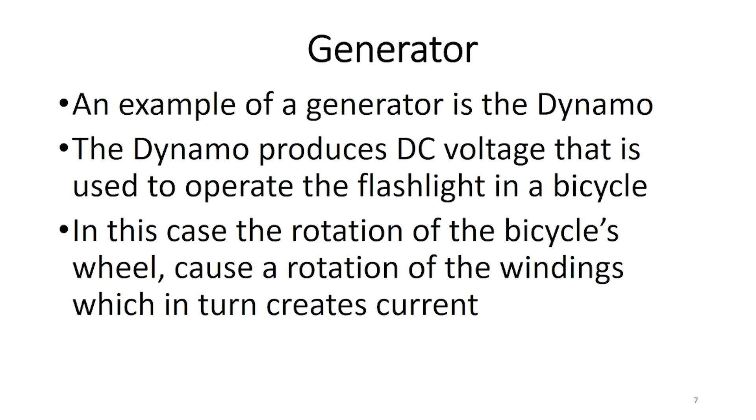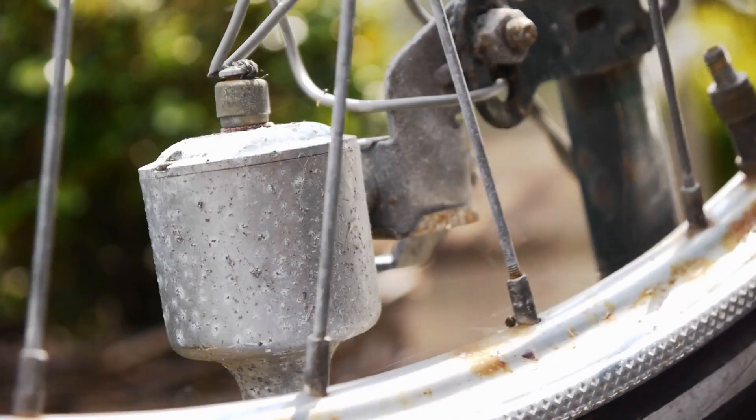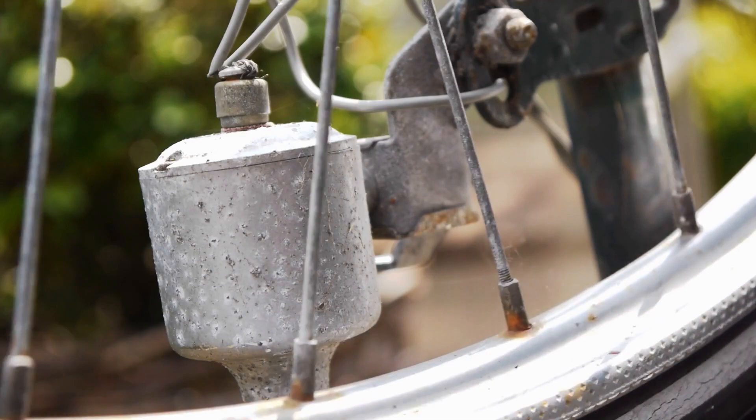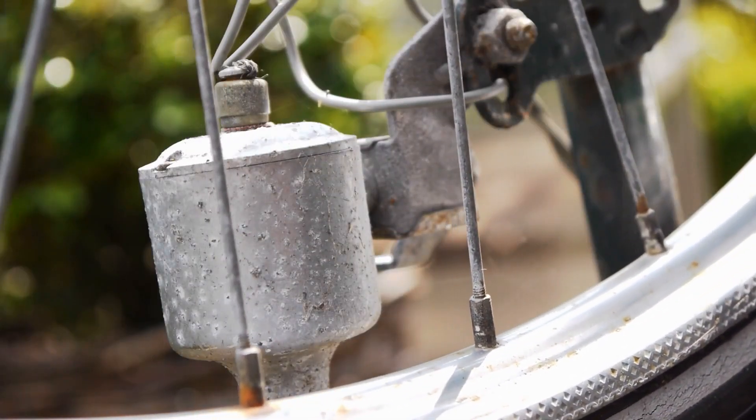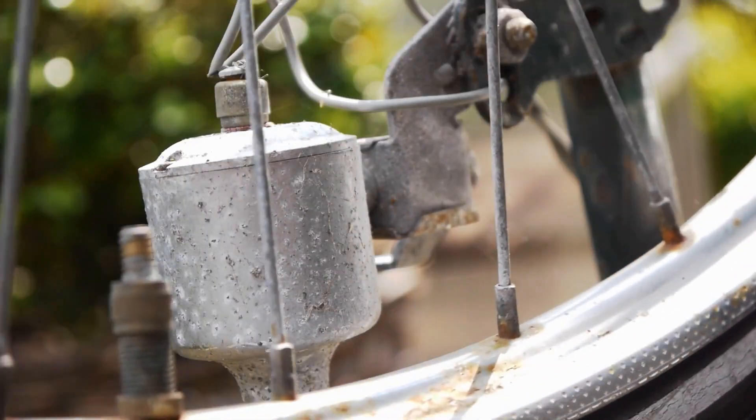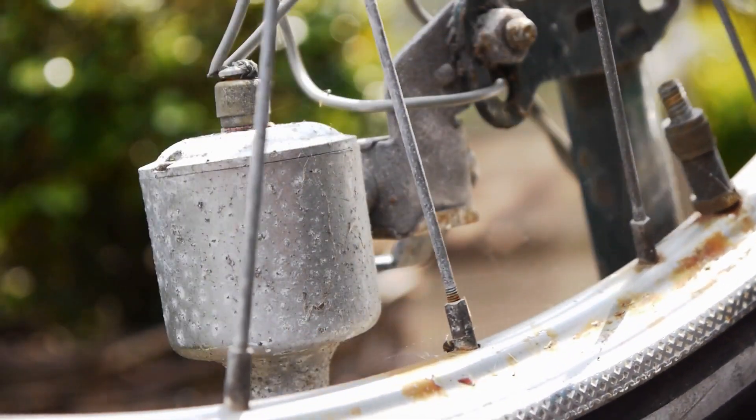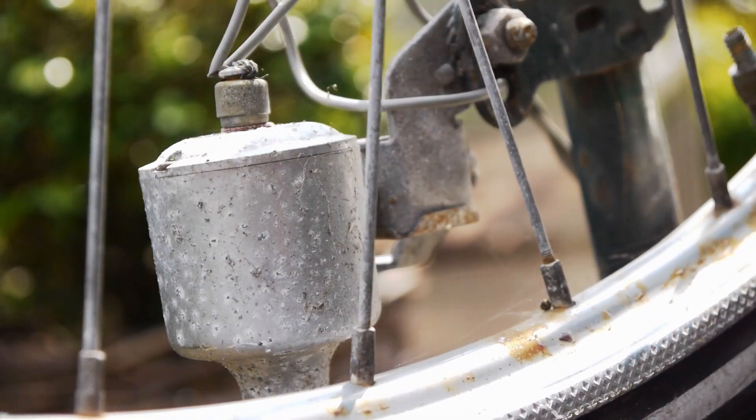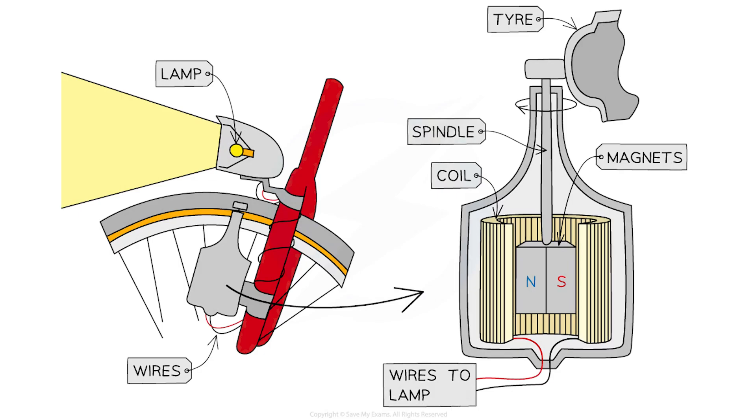An example of a generator is the dynamo. The dynamo produces DC voltage that is used to operate the flashlight in a bicycle. In this case, the rotation of the bicycle's wheel causes a rotation of the windings, which in turn creates current. This current flows through the flashlight circuit, and as a result, it distributes light.